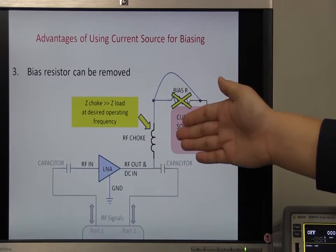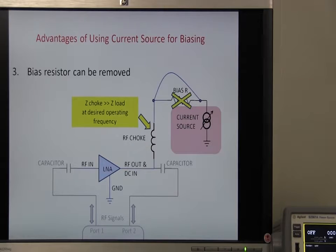Third, if you chose an RF choke that has a high impedance at the desired operating frequency, you don't need the series bias resistor that makes the evaluation to be easier and faster.